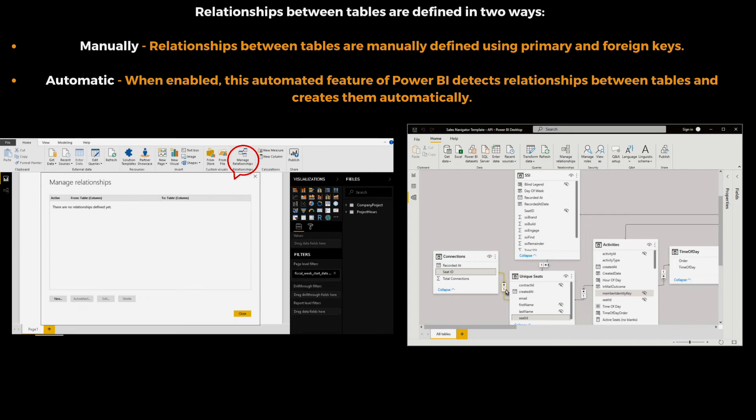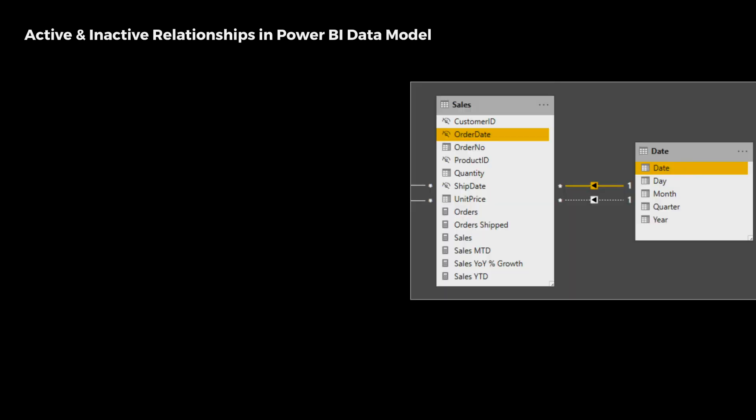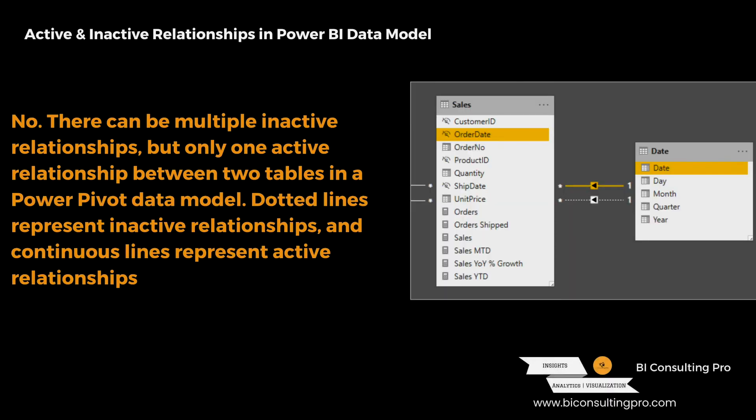Related to that, your interviewer can also ask: can you have more than one functional relationship between two tables in a Power Pivot data model or Microsoft Power BI data model? Your answer is going to be no, because at any one time you can only have one active relationship.